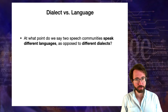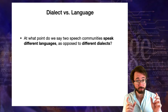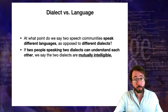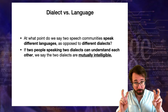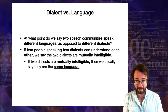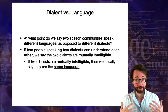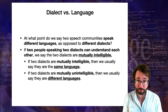This raises an interesting point: at what point do we say two speech communities speak different languages as opposed to different dialects? When two people speaking two dialects can understand each other, those dialects are mutually intelligible. A common way of defining a language is that it's a set of mutually intelligible dialects. If two dialects are mutually intelligible, we usually say they are the same language — but we'll need to add qualifications. When two dialects are mutually unintelligible, we usually say they are different languages, though there are important exceptions.